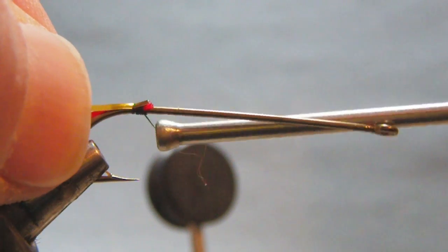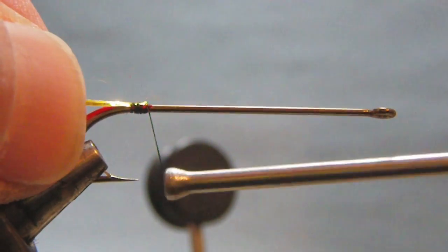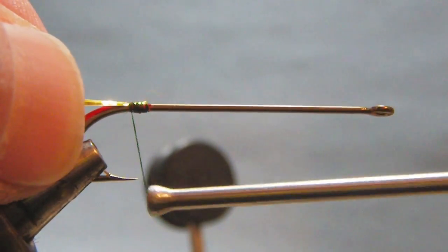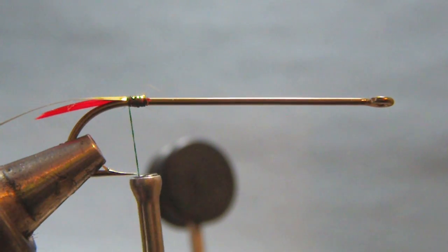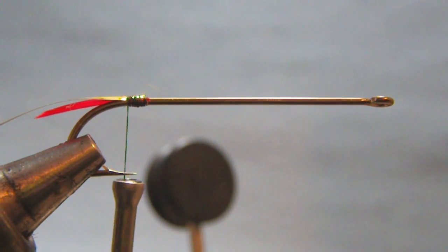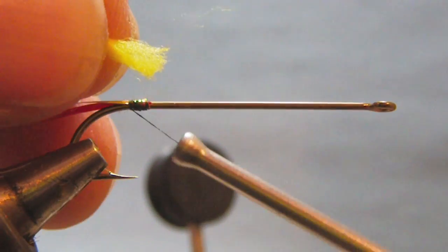When I wrap the tinsel up the hook shank, the silver would be what ends up being visible. Next I'm going to tie in three pieces of yellow uni-stretch.